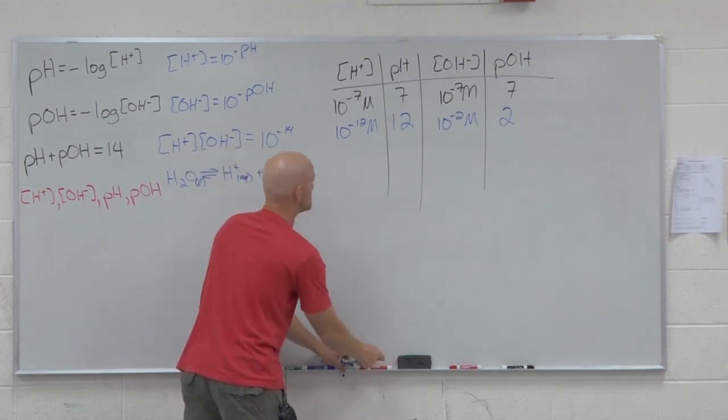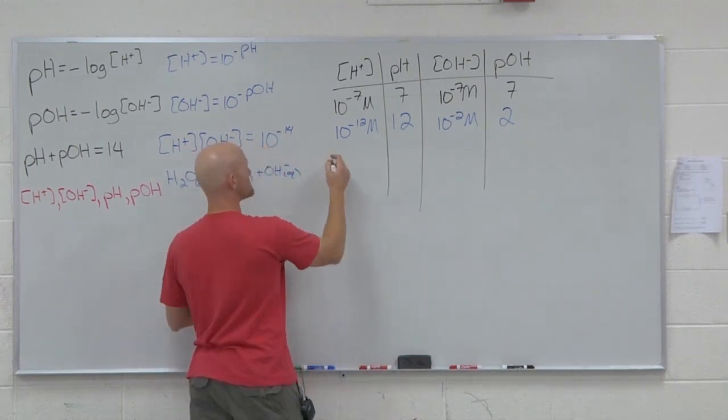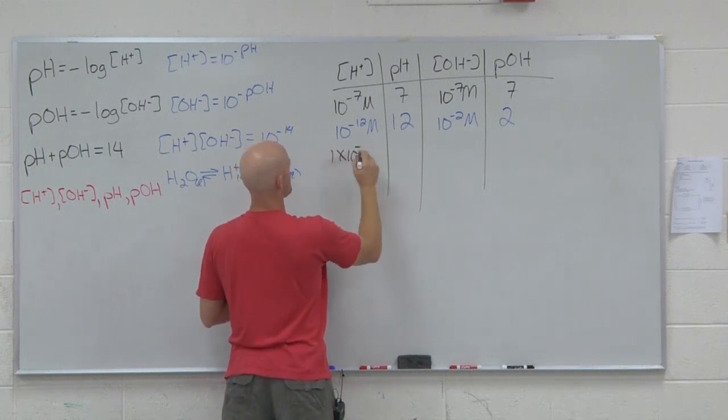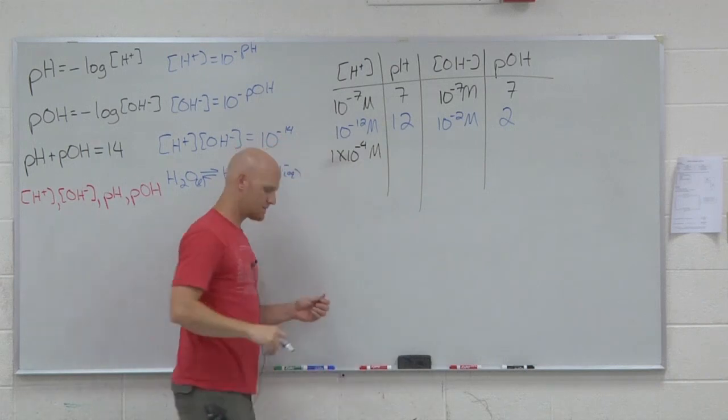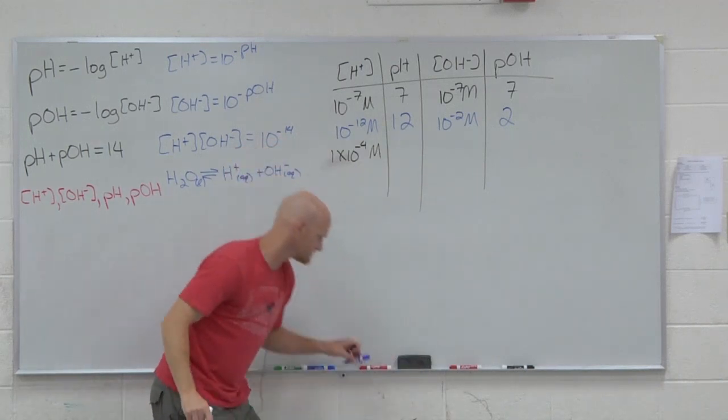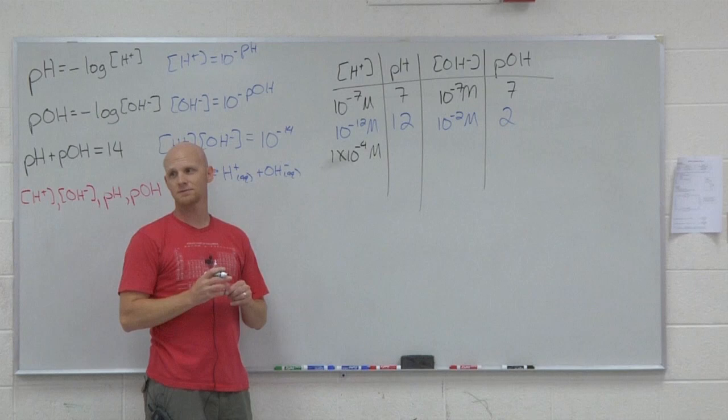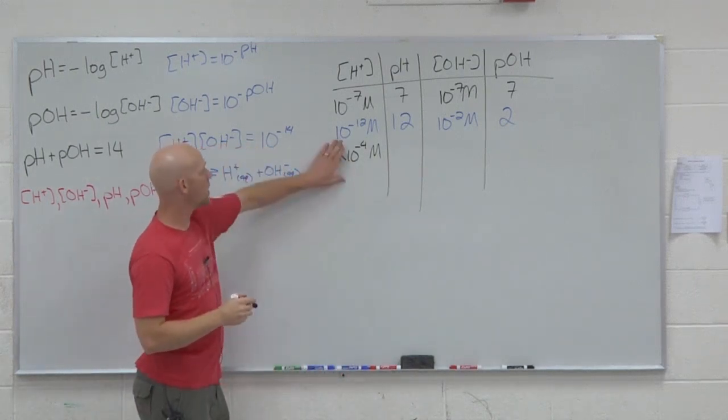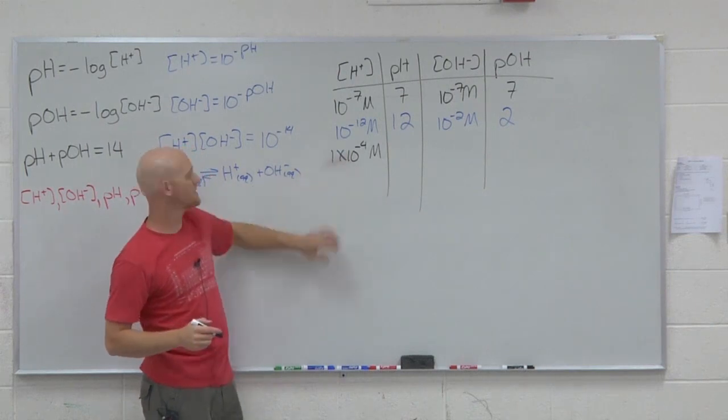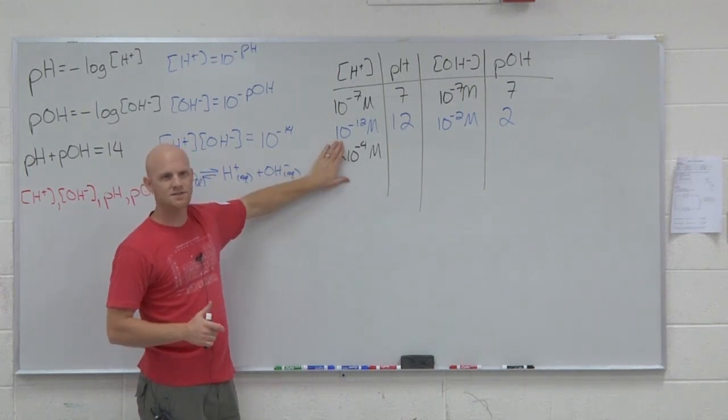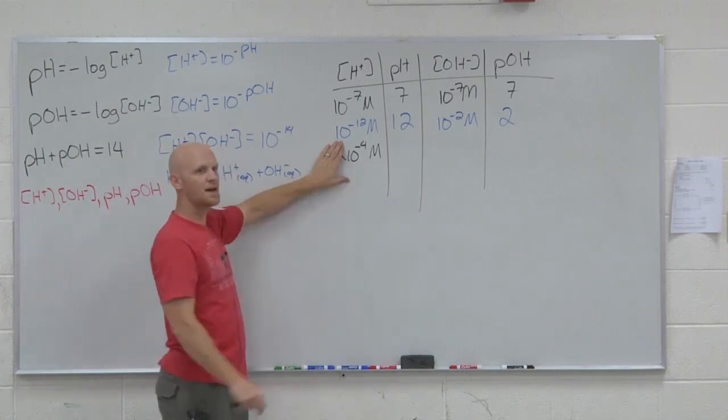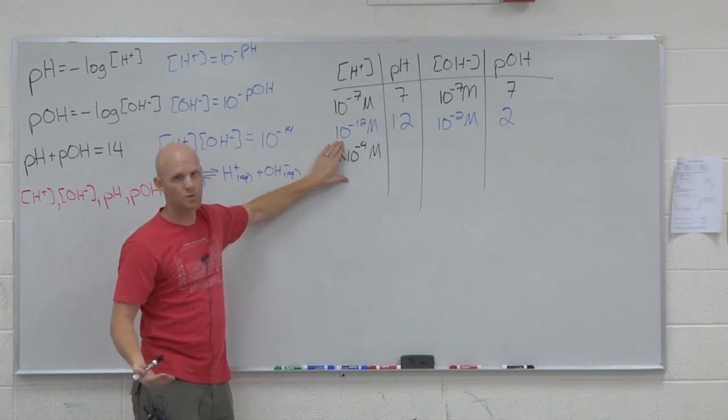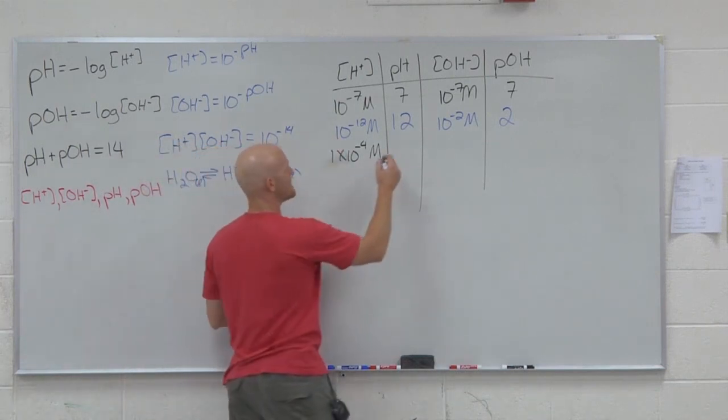So what if I told you that the H plus concentration was 1 times 10 to the negative 4 molar? My first question is what's the pH? Negative log of that. It turns out that the log, when you have 1 times 10 to the, you can ignore the 1. A log just cancels out the power of 10. So the log of this is negative 4. The negative log would be positive 4. And so the pH is 4.